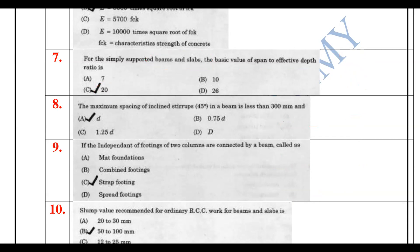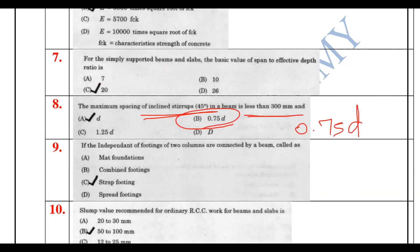For the spacing of inclined stirrups, when the beam depth is less than 300mm, the maximum spacing of inclined struts is 0.75D, where D is the effective depth of the beam.